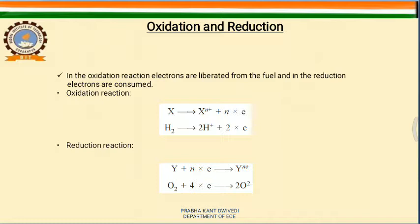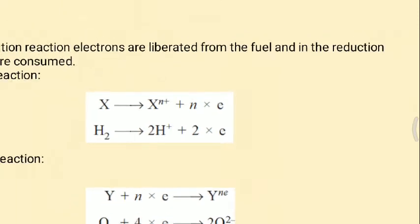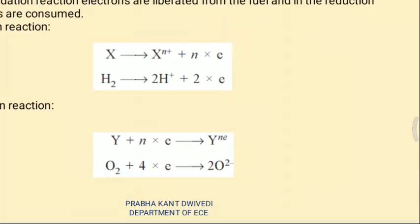As shown in the example, consider atom X. This atom releases N number of electrons and becomes positively charged. For example, a hydrogen atom releases 2 electrons and becomes a hydrogen ion (H⁺). Similarly, in reduction, atom Y receives N electrons and becomes a negative ion. For example, an oxygen atom gains electrons and becomes an oxygen ion (O²⁻).